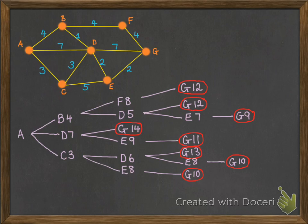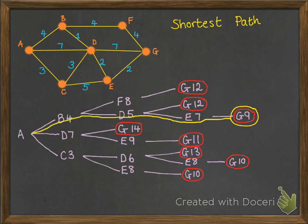OK, so now we've got all of our branches ending at G, we can look for which one has the lowest number, and that will give us the shortest path. Of course, that's right here at G9. So we follow through where that shortest path is, and we get that it went from A to B to D to E to G. That gives us our shortest path, and its total length is 9 hours long.